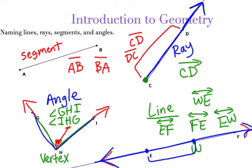Remember: segments, rays, and lines use two letters, and the symbol goes on top of those two letters. Angles need three letters and have a little angle symbol on the front. The one exception for angles is sometimes you can name it just by its vertex — so you might see just angle H. But you'll never see an angle named by two letters. You'll either name it more specifically with three letters, or occasionally with just one.